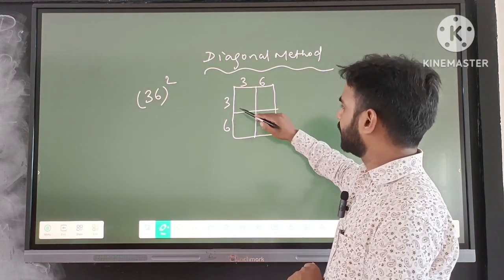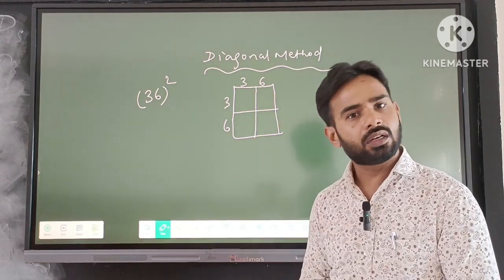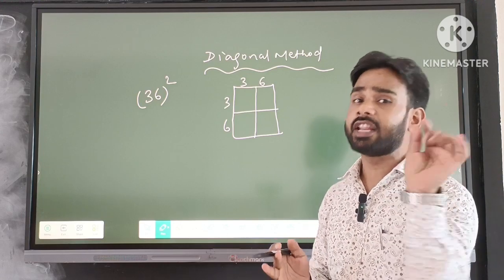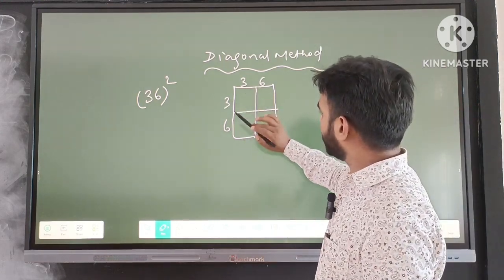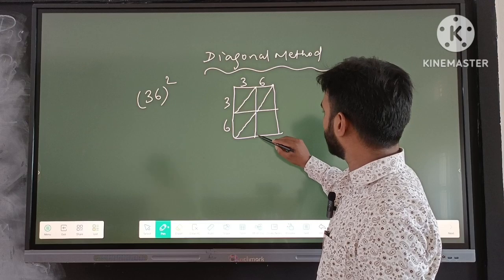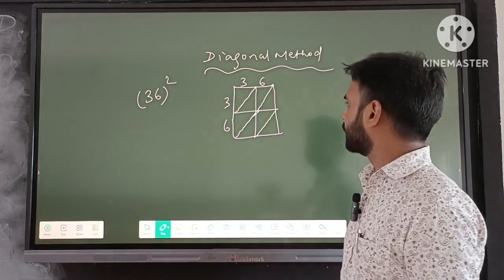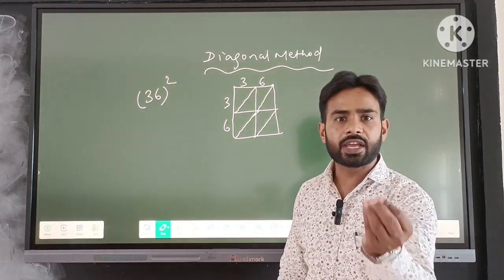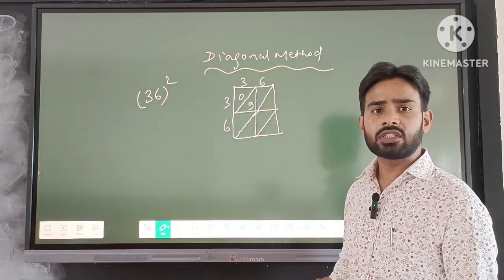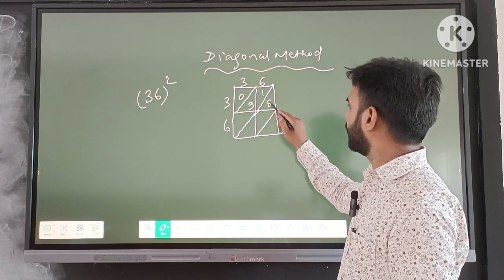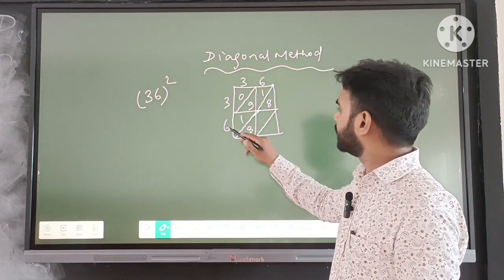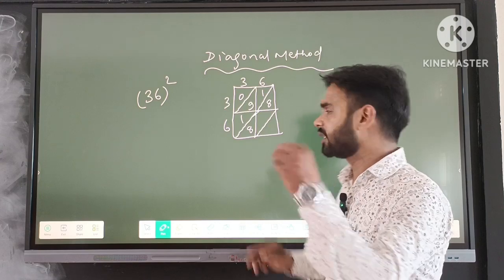Now we multiply each pair of digits. First, 3 × 3 = 9, written as 09 since we always work in pairs. Next, 3 × 6 = 18, written as 1, 8. Then 6 × 3 = 18, written as 1, 8. Finally, 6 × 6 = 36, written as 3, 6. Each two-digit product is placed in its respective cell of the 2×2 matrix, with digits separated by the diagonal.